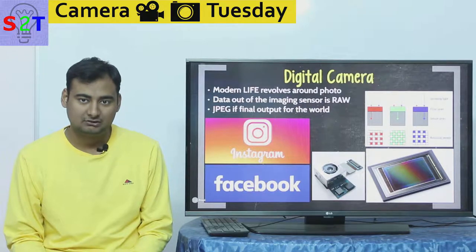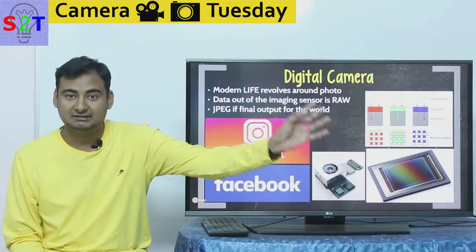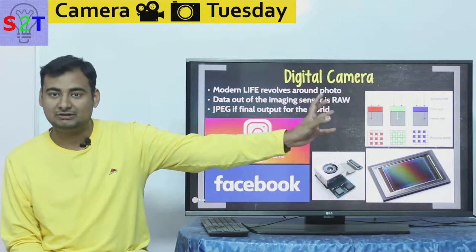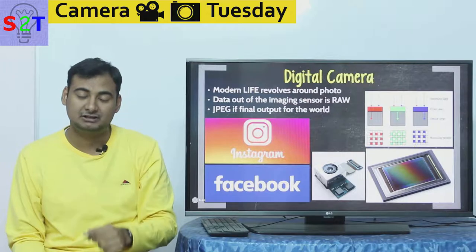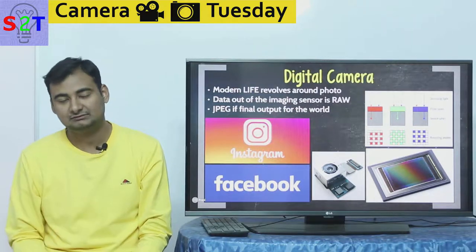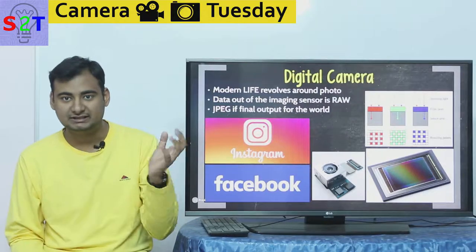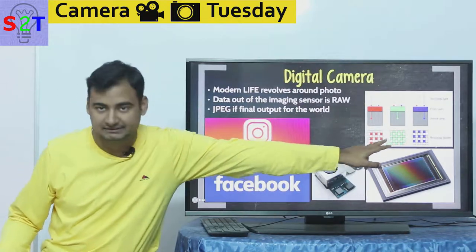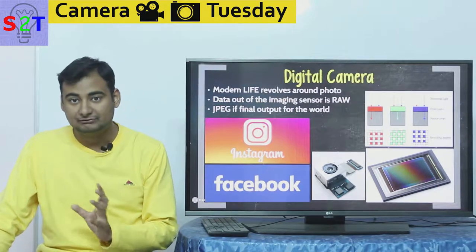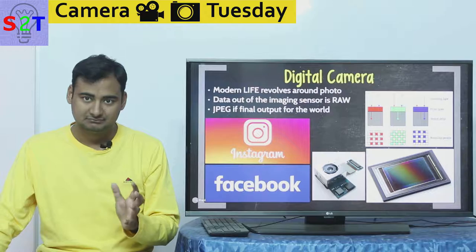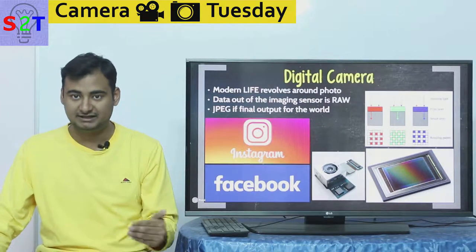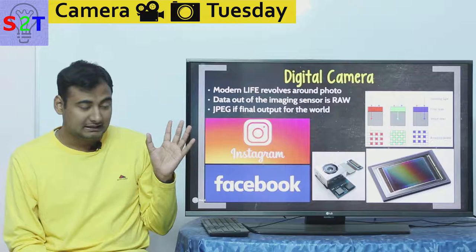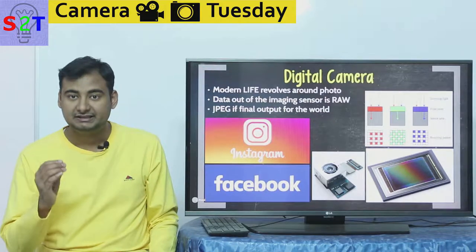We have to understand that imaging sensors themselves are black and white — the image they create is basically black and white. However, we put color filters on top of them. That data is sent to the processor, and the processor interprets it: if a pixel is bright under a red filter, it's a red pixel; if it's bright under a green filter, it's a green pixel. The pixel itself has no way of knowing the color of light — it only outputs whether it's bright or dark. Based on those filters, we collect the color information.